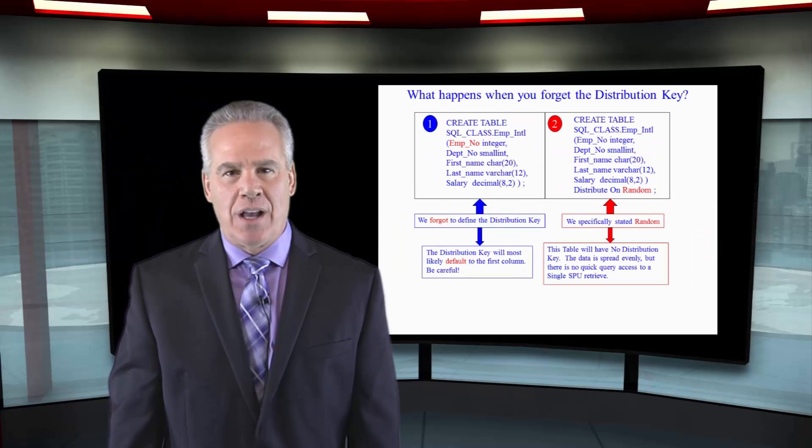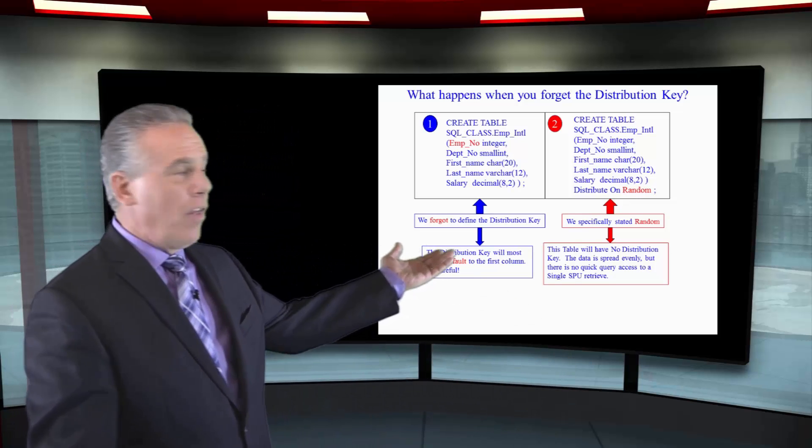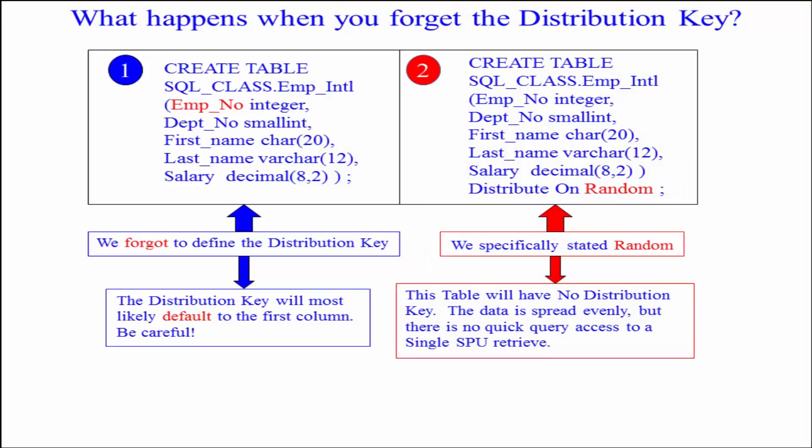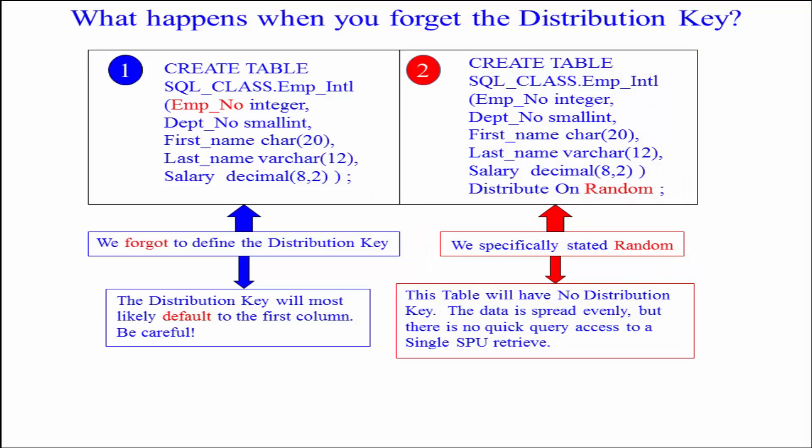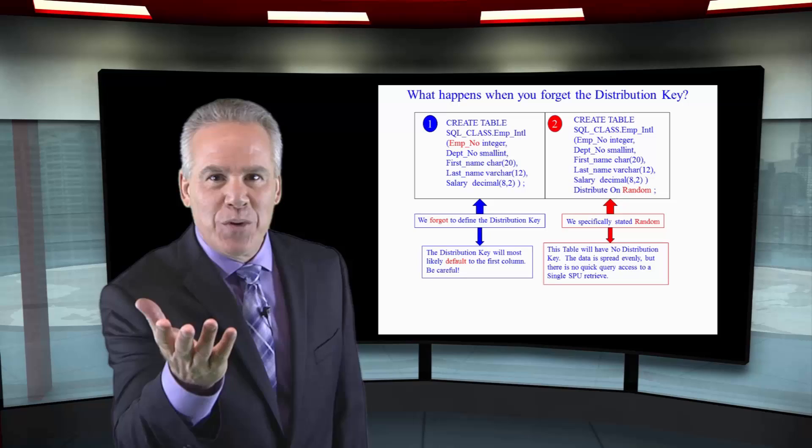Here is a very common mistake. As you can see, we have two tables here. On the far right here, we have a distribute on random, so we know how that data is going to be distributed. But we forgot to pick the distribution key in the first example. What's Netezza going to do? Well, it actually is a little bit more complicated than this, but you can just about guarantee 99% of the time it's going to pick the first key in the table, EMPNO in this case, and make that the distribution key. So make sure when you're creating these tables, put your distribution key out there.